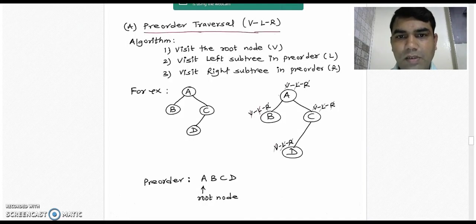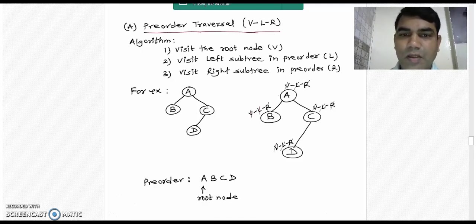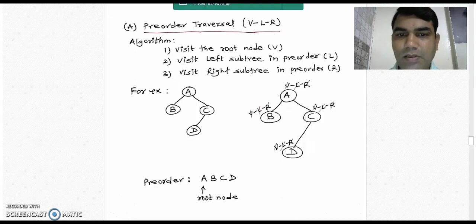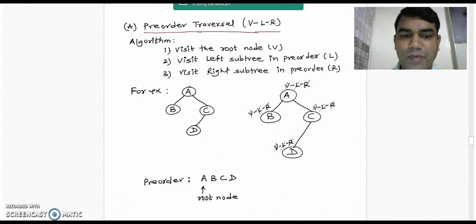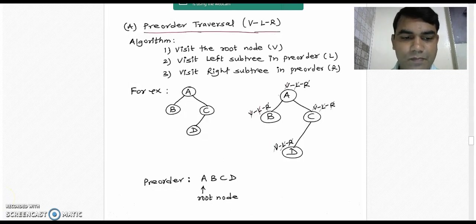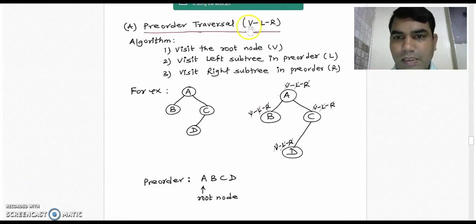The first method to traverse a binary tree is called pre-order traversal. There are three steps in the algorithm. First, we visit the root node (V). Then we visit the left subtree in pre-order fashion (L). Third, we visit the right subtree in pre-order sequence (R). This is a recursive algorithm repeated till the last node is traversed. The shortcut for pre-order is V, L, R.